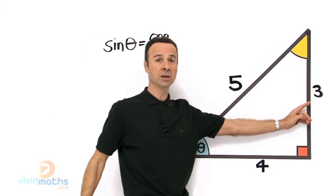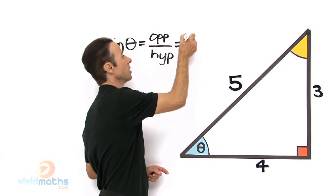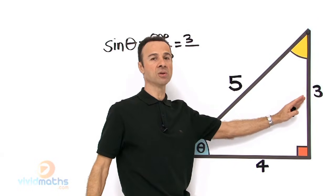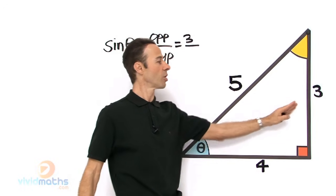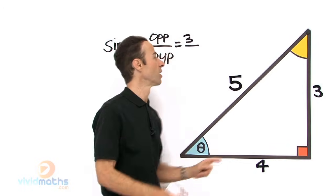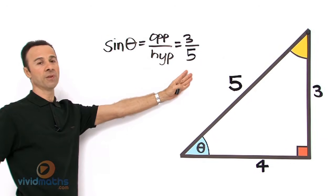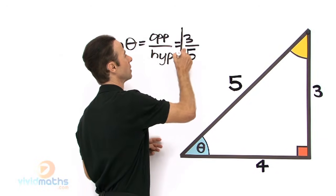So let us write down opposite over hypotenuse. Opposite is 3, so that is 3 over hypotenuse, and hypotenuse here is 5. So sine theta quite simply is 3 fifths. So there is our 3 fifths.